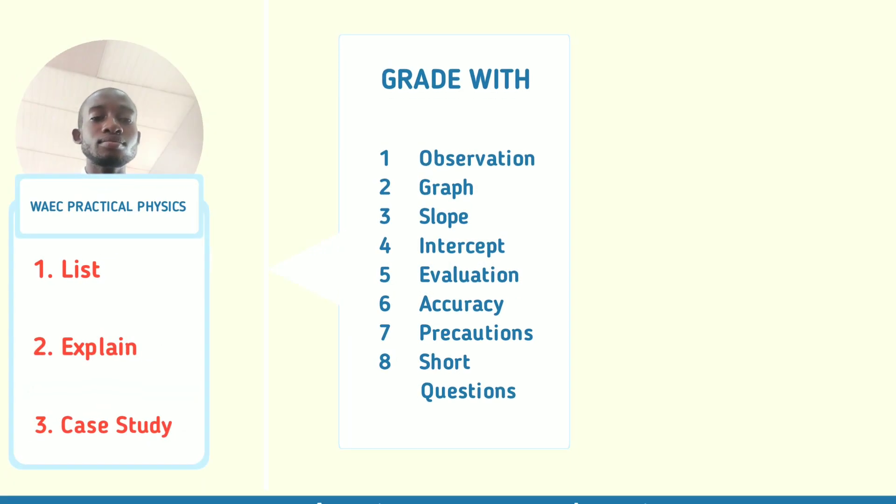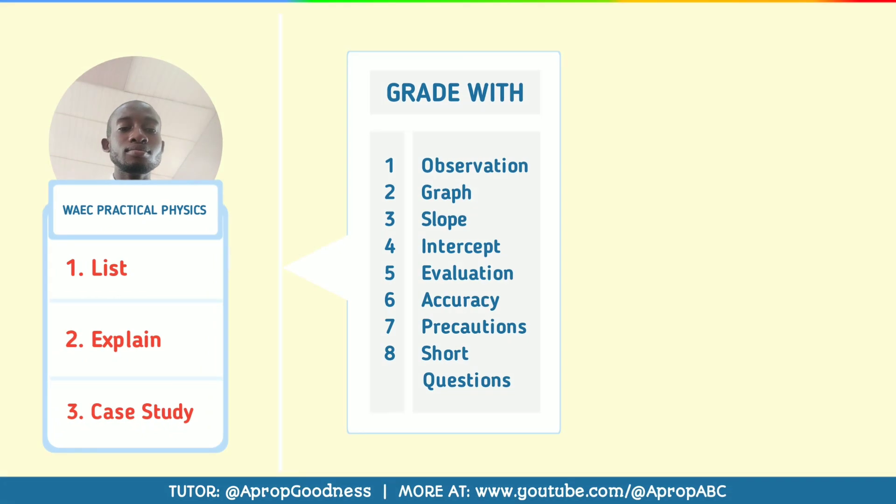What do they grade? Number one: observation. Number two: graph. Number three: slope. Number four: intercept and deduction. Number five: evaluation. Number six: accuracy. Number seven: precaution. These are the categories you will be graded on in the physics practical examination.